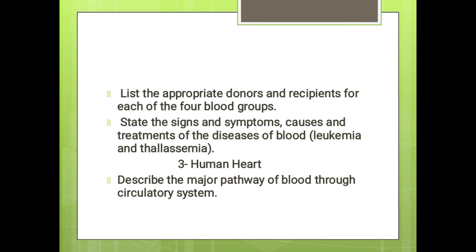We will identify the appropriate donors and recipients for each of the four blood groups: A, B, AB, and O. Next, state the signs, symptoms, causes, and treatments of diseases of the blood. The two diseases of blood we will discuss in this chapter are thalassemia and leukemia.